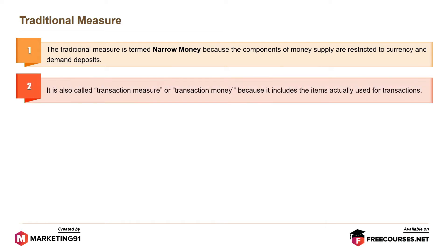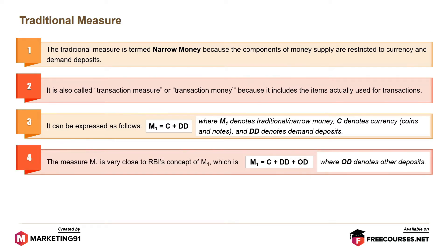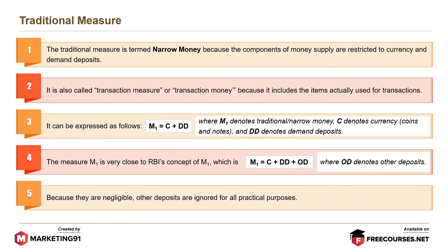The traditional measure is also called transaction measure or transaction money because it includes the terms actually used for transactions. It can be expressed as M1 equals C plus DD, where M1 denotes traditional or narrow money, C denotes currency, coins and notes, and DD denotes demand deposits. The measure M1 is very close to RBI's concept of M1, which is M1 equals C plus DD plus OD, where OD denotes other deposits. Because they are negligible, other deposits are ignored for all practical purposes.